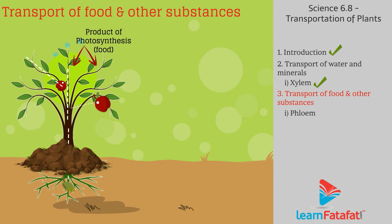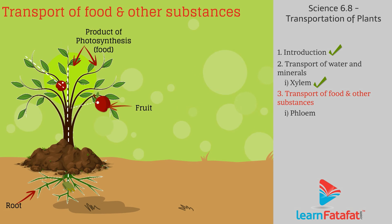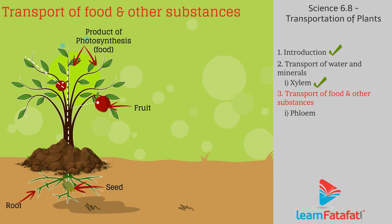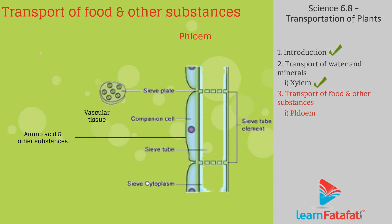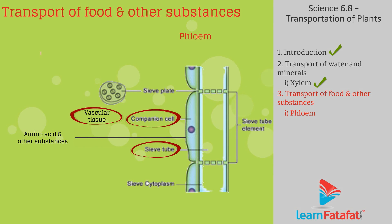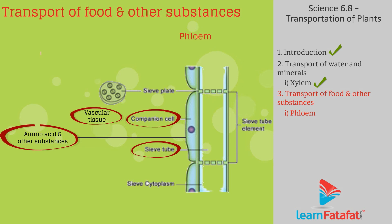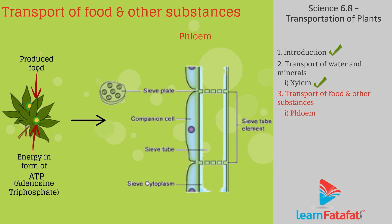Transport of food and other substances: plants prepare their food with the help of photosynthesis. This food needs to be transported to storage organs such as roots, fruits, and seeds, and other body parts. The transport of soluble products of photosynthesis is called translocation. Translocation occurs in sieve tubes with the help of companion cells in a vascular tissue called phloem. Phloem also transports amino acids and other substances. The food produced in leaves is transported to phloem tissue using energy stored in the form of ATP.